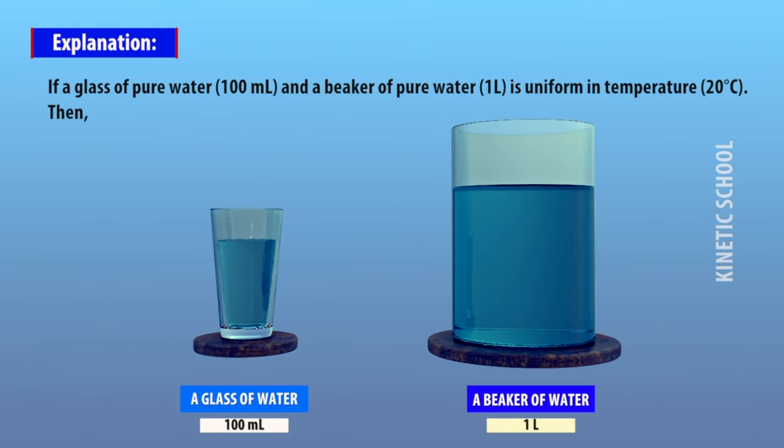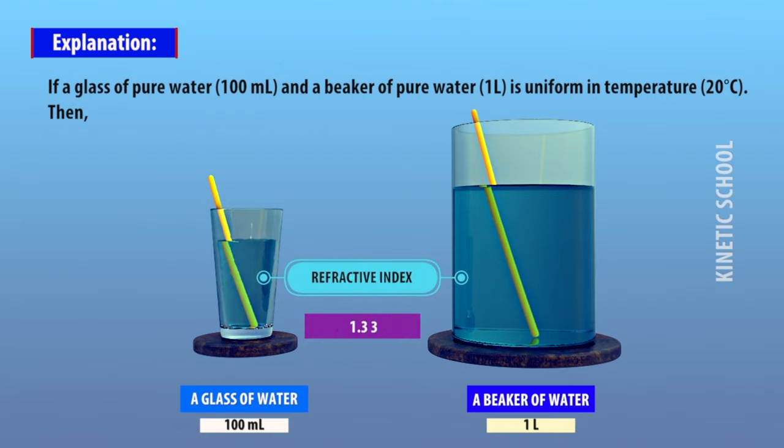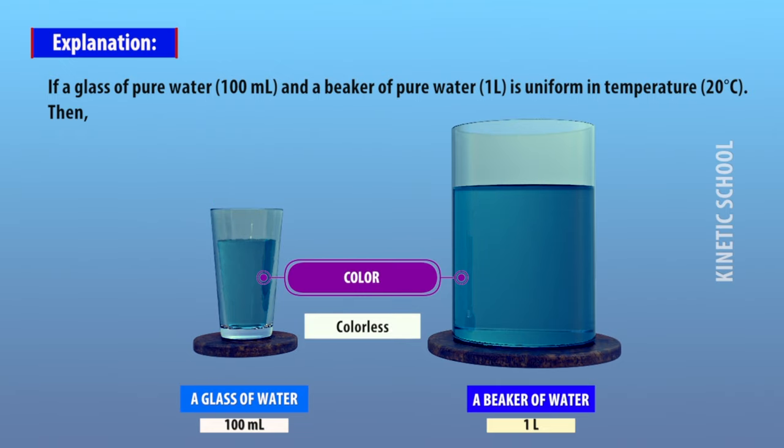A glass of pure 100 ml water and a beaker of pure 1 liter water are uniform in temperature at 20 degrees Celsius. Then concentration, density, melting and boiling point, and specific heat capacity have to be the same.